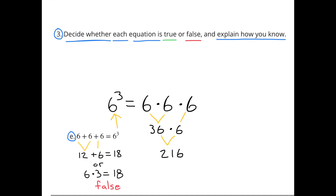E: 6 plus 6 plus 6 plus 6 equals 6 to the power of 6. 6 plus 6 equals 12, bring down the next 6 and you have 12 plus 6, which equals 18, or 6 times 3 equals 18. But 6 to the power of 6 is 6 times 6 times 6 times 6 times 6 times 6 — 6 times 6 is 36, times 6 is 216. Since 18 does not equal 216, this equation is false.